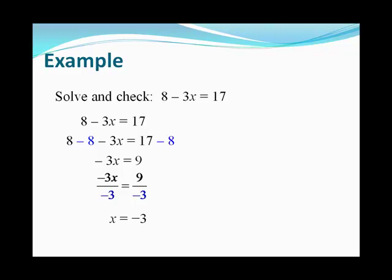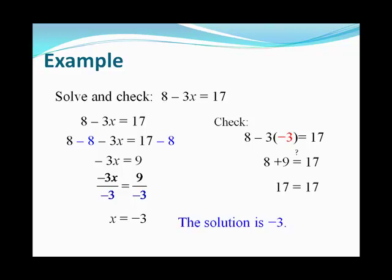To check our answer, we put this back into the original equation. Our potential solution is x = -3. We simplify that out and see 17 = 17. So that was our correct answer, x = -3.